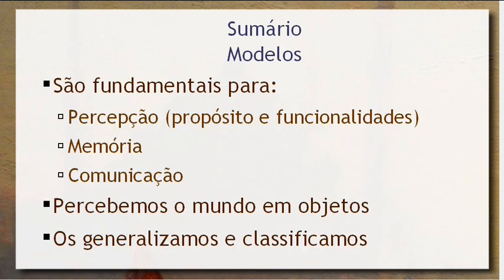Resumindo, fazendo um sumário de tudo que a gente viu: os modelos vão ser fundamentais para a percepção, já que a gente consegue, através de modelos ou estereótipos, ver o propósito e a funcionalidade das coisas. Eles são importantes para a nossa memória — a nossa memória é limitada, então a gente estereotipa as coisas e guarda os diferenciais. E eles são importantes para a comunicação. Nós percebemos o mundo na forma de objetos e o generalizamos e classificamos, usando as classes e os estereótipos. A gente vai ver mais para frente como os modelos vão ser usados em contextos mais específicos, como a computação, e como eles podem ser instrumentalizados.